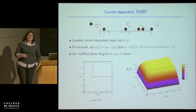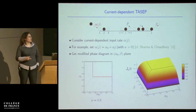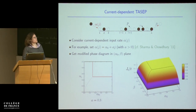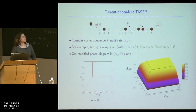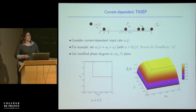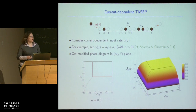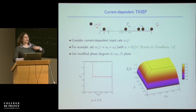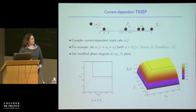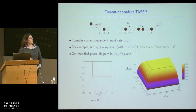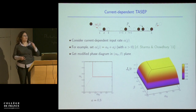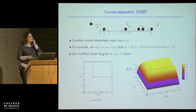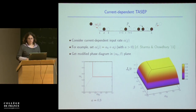You can check this argument with simulations. On the right, I show simulation data for precisely this model — the average current after one very long trajectory — as a function of alpha_0 and beta. The black lines are the predicted phase boundaries, and the colours are smooth numerical data. You can see it seems to fit very well.